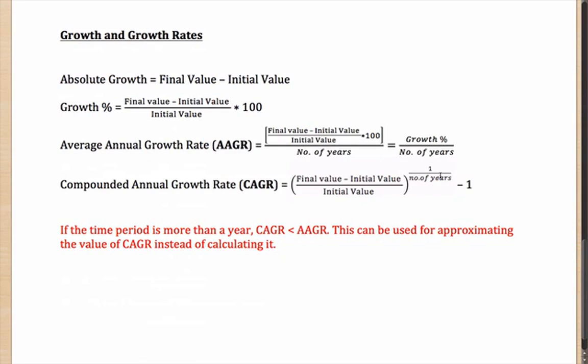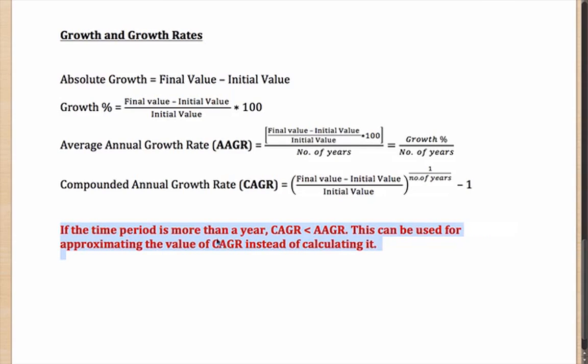But you might realize that this will be a little difficult to calculate. How are you going to calculate 1 by 4 or 1 by 7th power or something? That is the reason I have highlighted this very important point. If the time period is more than 1 year, well if the time period is 1 year you don't have to do anything, you will get the CAGR directly. Then CAGR will always always be lesser than the AAGR. This can be used for approximating the value of CAGR instead of calculating it.